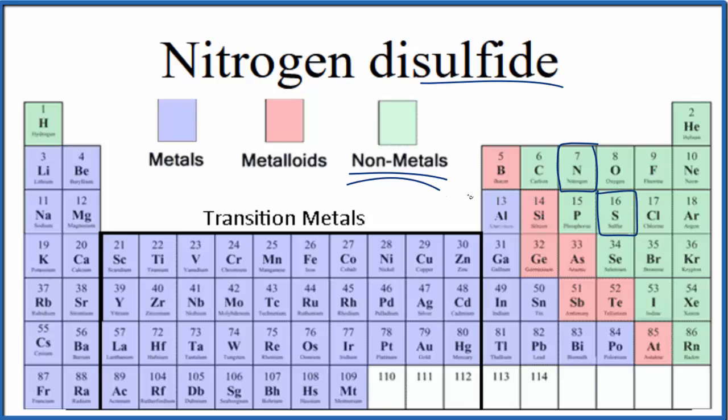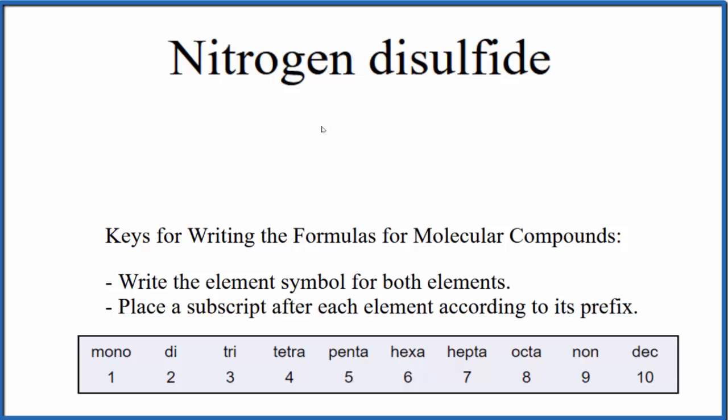When we have two nonmetals, that means we have a molecular, also called a covalent compound. We can use these rules here to write the formula for nitrogen disulfide.